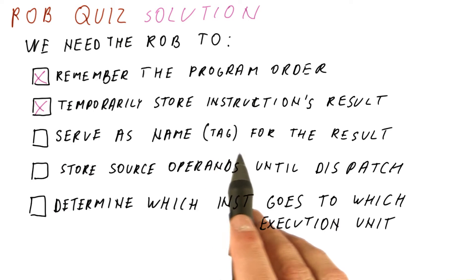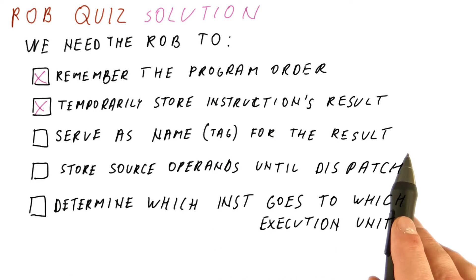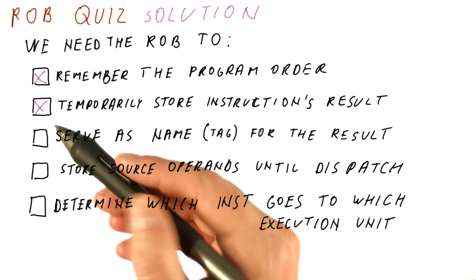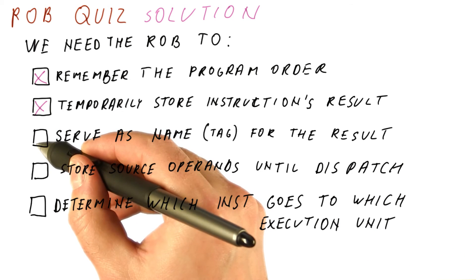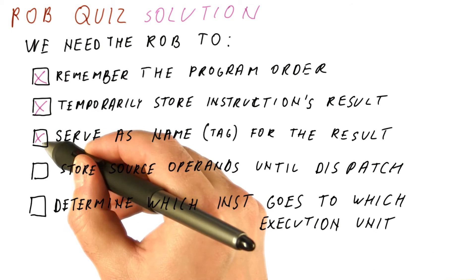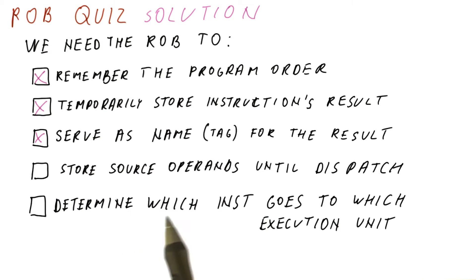To serve as the name or the tag for the result — yes. With Tomasulo's algorithm, the reservation station was playing this role, but with the ROB, the ROB entry is really going to serve this role for an instruction.